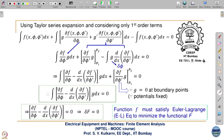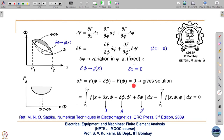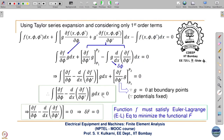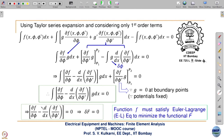After integration by parts the two remaining terms are combined and set to zero. For any arbitrary g(x), the integral being zero requires the integrand itself to be zero. This gives the Euler-Lagrange equation: ∂f/∂φ − d/dx(∂f/∂φ') = 0, and this bracketed expression is called the Euler-Lagrange expression. Setting this to zero corresponds to minimizing the energy.